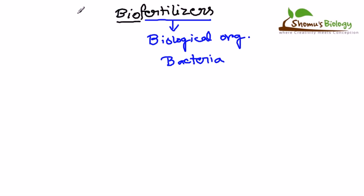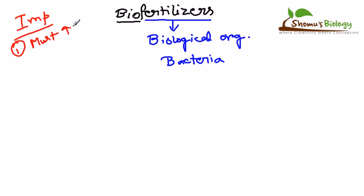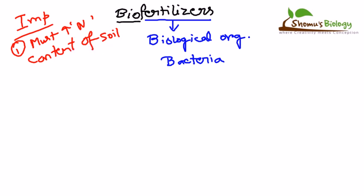Fertilizers have definite importance. The most important feature is that they must increase the nitrogen content of the soil. That is what we actually want to achieve. We need to increase the nitrogen content of the soil, and for that we add different fertilizers — chemical or other types. Nowadays we are focusing on making fertilizers with bacterial cells. How could bacteria act like a fertilizing agent? That's the biggest question.